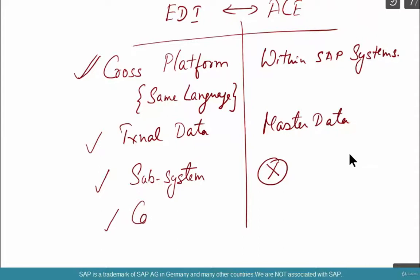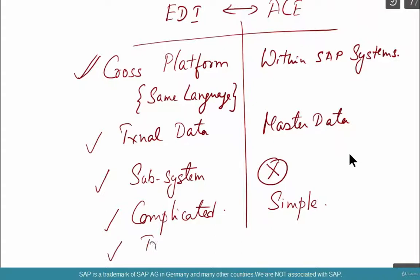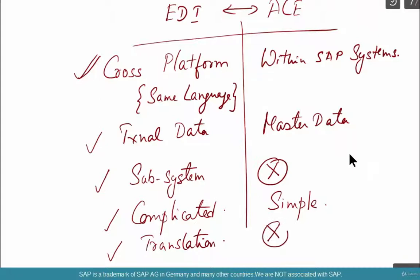EDI is actually more complicated — there are more moving parts like a subsystem, and translation happens. But ALE is a simple system. A master data IDOC, for example, can move from system A to system B seamlessly, without the need for a large subsystem. With EDI, it's complicated because translation from the IDOC to a standard format like a text file is involved. There is no such translation needed in ALE, so ALE is a much simpler system.